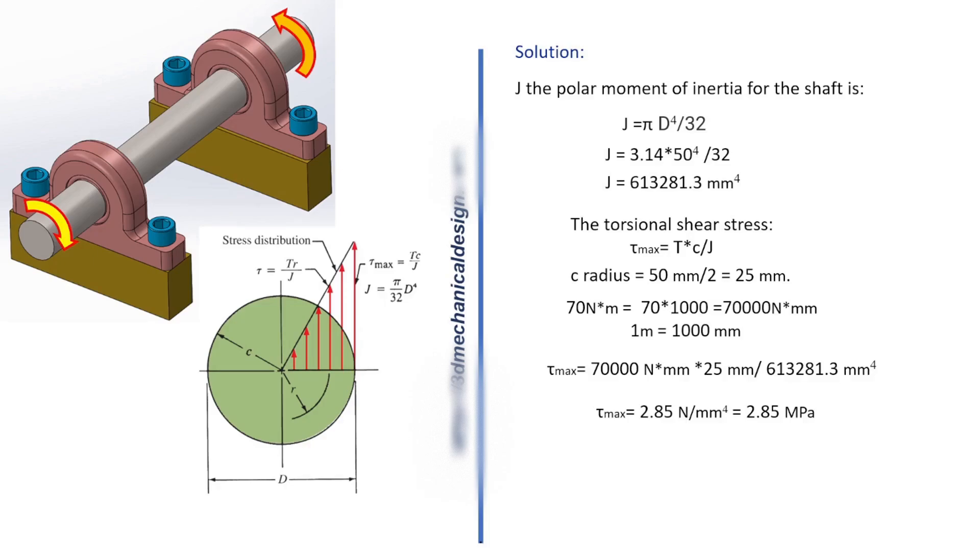The maximum torsional shear stress occurs at the outside surface of the shaft around its entire circumference.